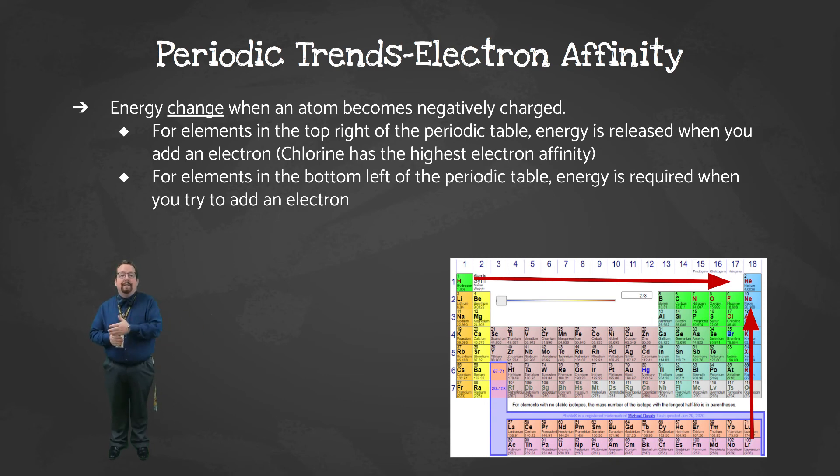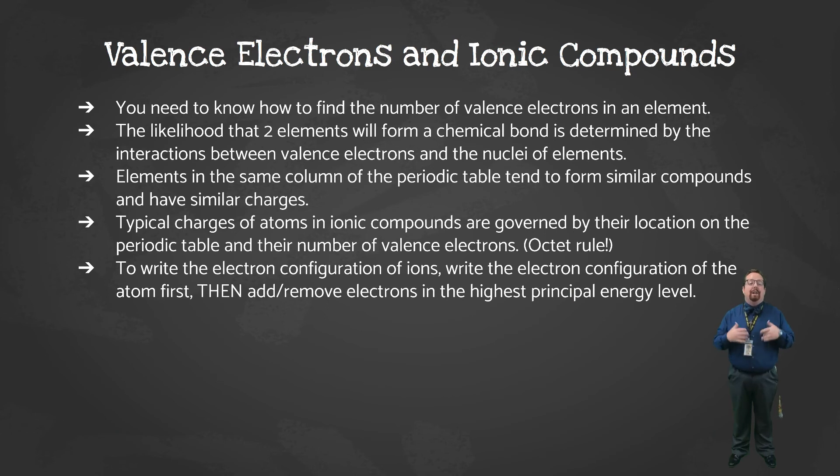As you move toward the left, atoms want to lose electrons, not gain them. As you go towards the bottom, the atoms are larger, so the nucleus can't attract the electrons quite as easily. Therefore, the further left and down you go on the periodic table, the more energy it takes to add an electron to the atom, and therefore, the smaller the electron affinity.